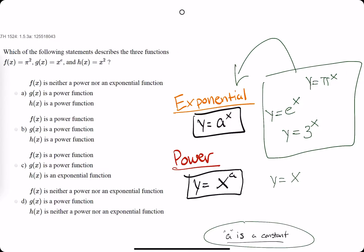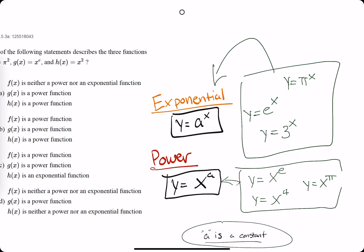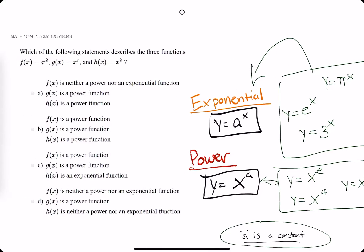So a couple examples, y equals x to the e, y equals x to the 4th, y equals x to the pi. So all of these have x as the base, but a constant or a number as the exponent. So these are power functions.